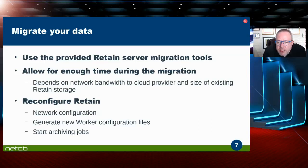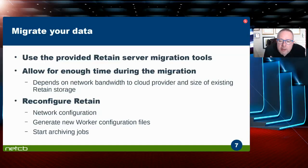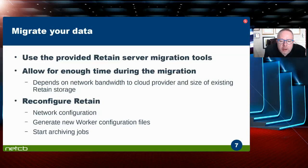Once the entire migration has completed, it's time to reconfigure Retain. You start up Retain, log on to the Retain console, and immediately make changes to the network configuration information. You'll need to generate new worker configuration files and import them on your workers so they know exactly which Retain server to communicate with. Then you can start your archiving jobs again, and hopefully not too much time expired during the migration period before the archiving resumes.